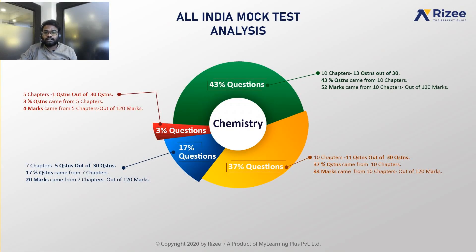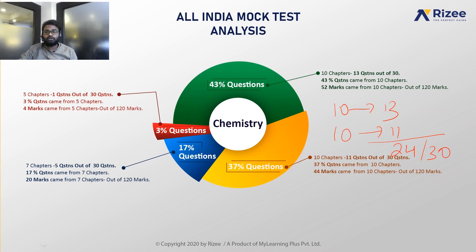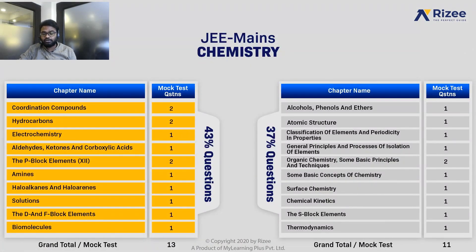In Chemistry, 43% of questions — that is 13 questions from 10 chapters — and from the remaining 10 chapters, 11 questions are given, making a set of 24 out of 30 questions. You can clearly see the importance given to these top chapters for JEE Mains. In the distribution, you can see the 43% and 37% weightage chapters, giving nearly 13 and 11, totaling 24 questions from the top 20 chapters.